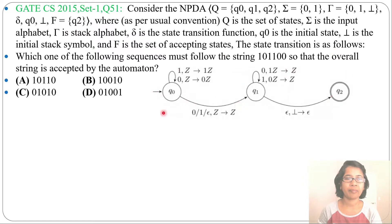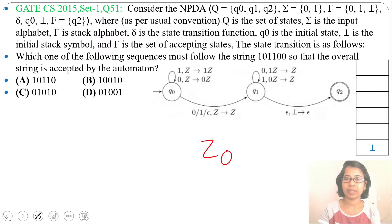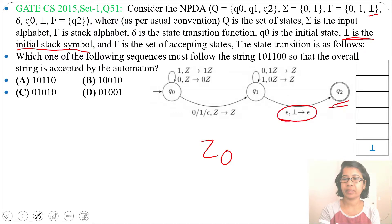This is a state transition diagram. The question asks which of the following sequences must follow the string 101100 so that the overall string is accepted by the automaton. Note that Optac is the initial stack symbol, and this is an empty stack plus final state acceptance mechanism — it reaches an empty stack and goes to the final state.